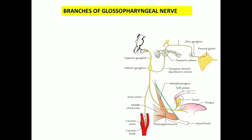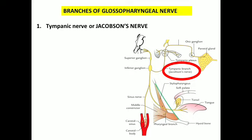Now let us learn the various branches arising from the glossopharyngeal nerve. The first branch to explain is the tympanic branch, also called the tympanic nerve or Jacobson's nerve. This tympanic branch is the first branch that leaves the inferior ganglion. It enters a small foramen in the jugular fossa leading to the tympanic canaliculus. Through the tympanic canaliculus, this branch reaches the tympanic cavity or middle ear cavity and forms a plexus called the tympanic plexus, in relation with the promontory of the middle ear cavity.